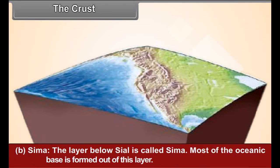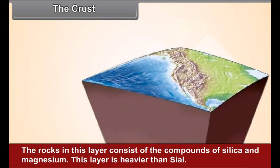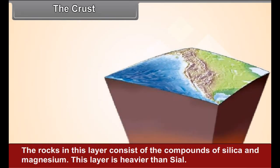SIMA. The layer below SIAL is called SIMA. The rocks in this layer consist of the compounds of silica and magnesium. This layer is heavier than SIAL.